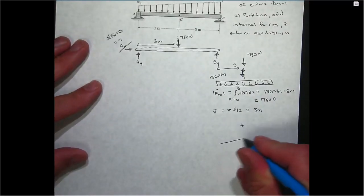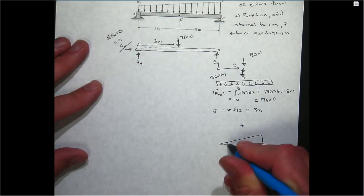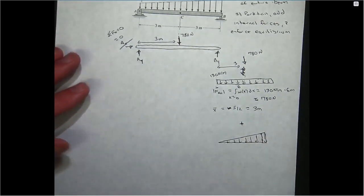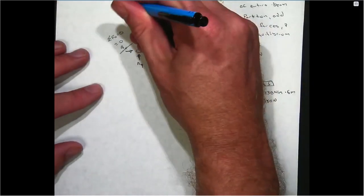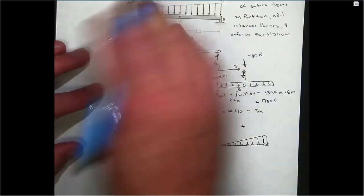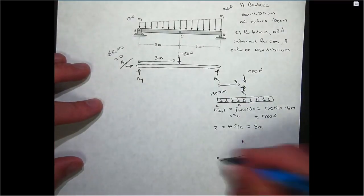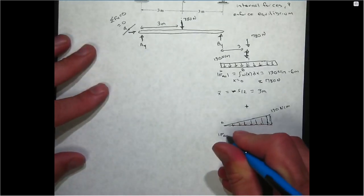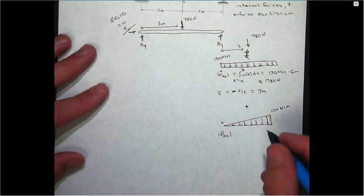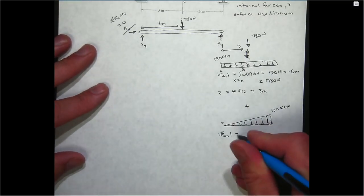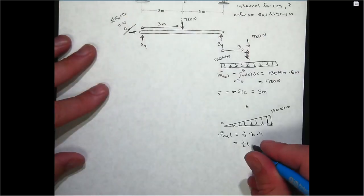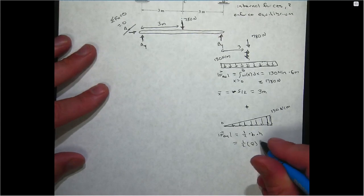I know since the triangular part is fatter on the right, that its centroid is going to be on the right side of this beam. So I'll model this distribution as a rectangular part plus a triangular part. This density goes from 130 up to 260. So if you subtract the uniform portion away, the triangular part you can view is going from 0 to 130.